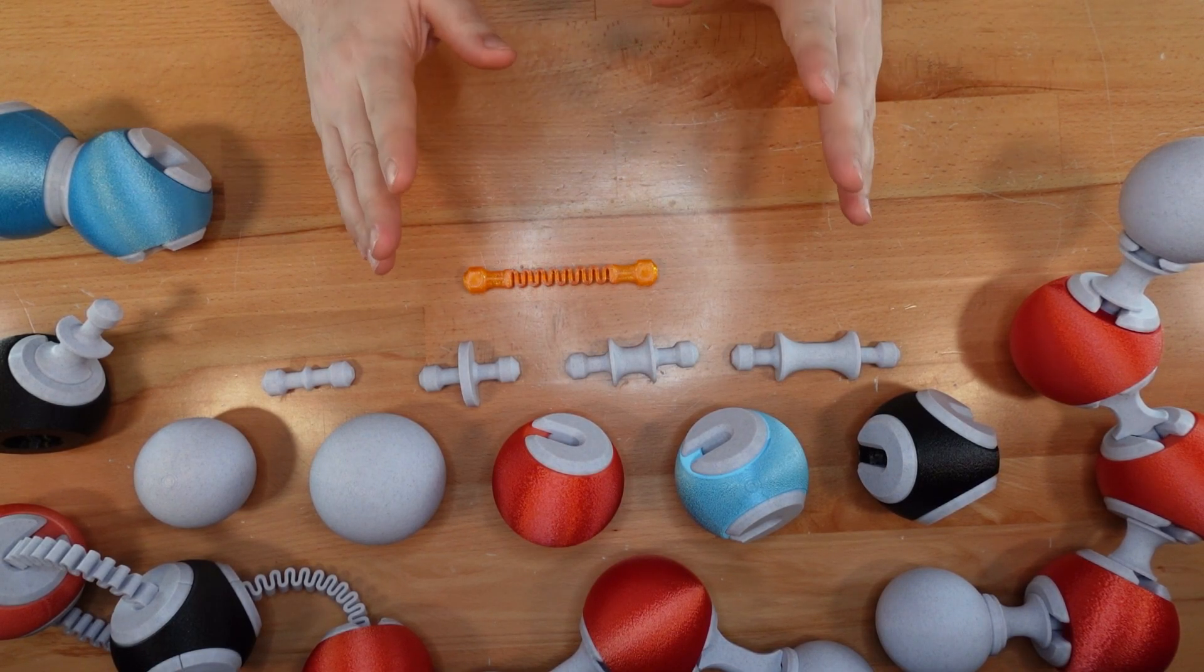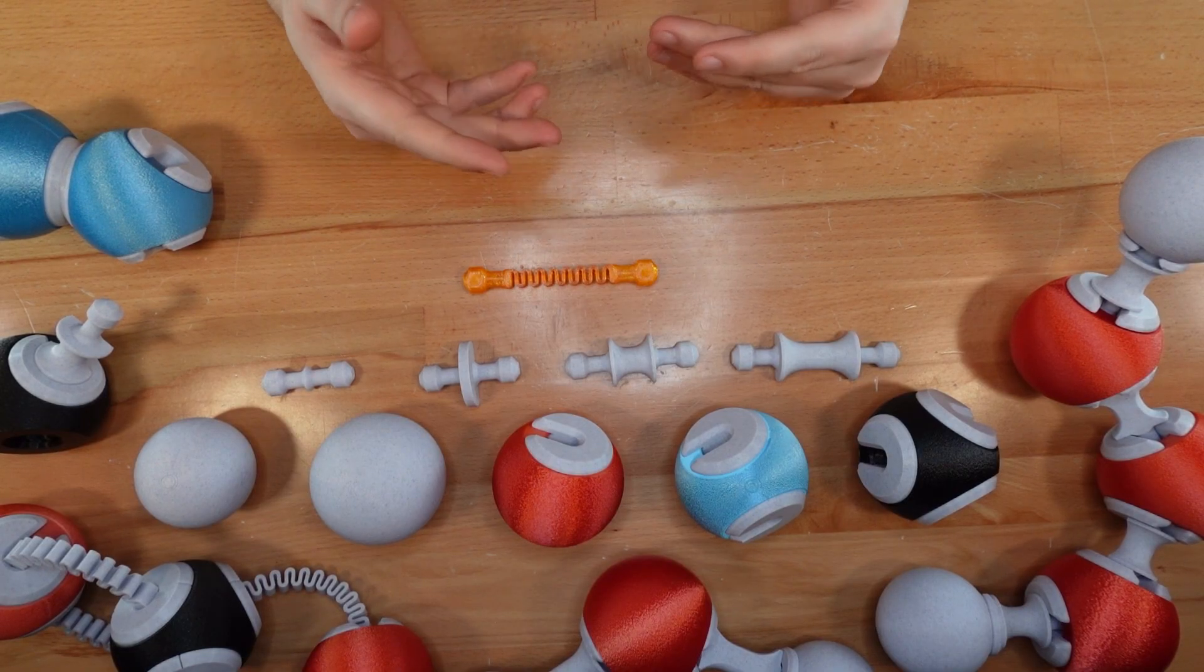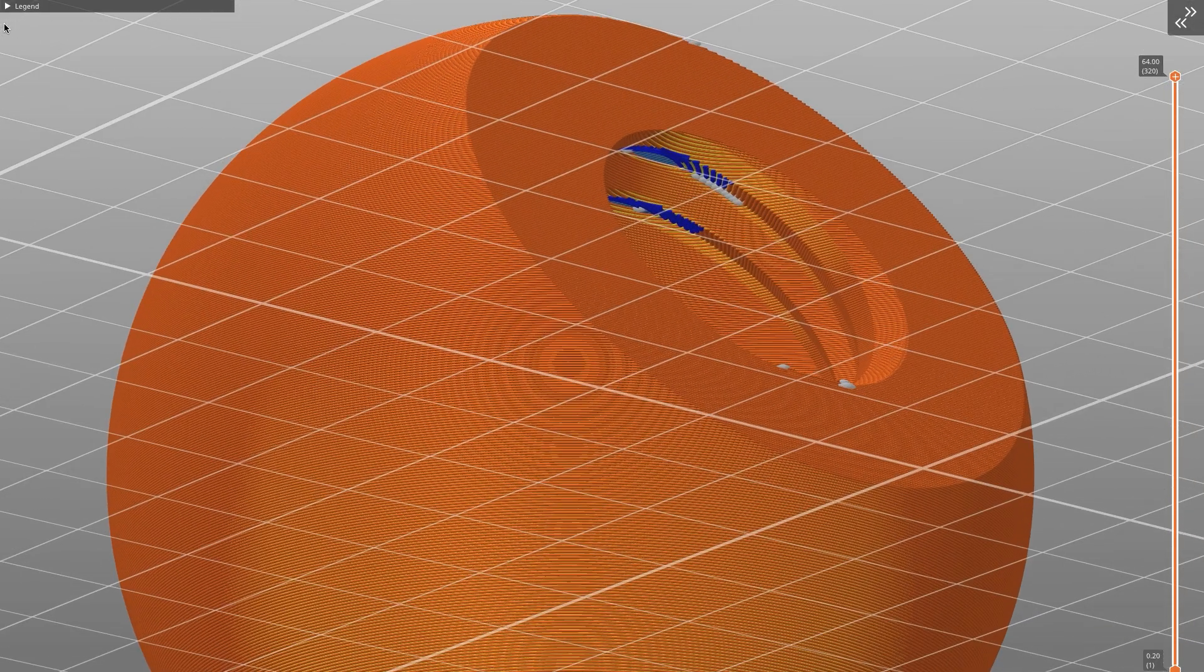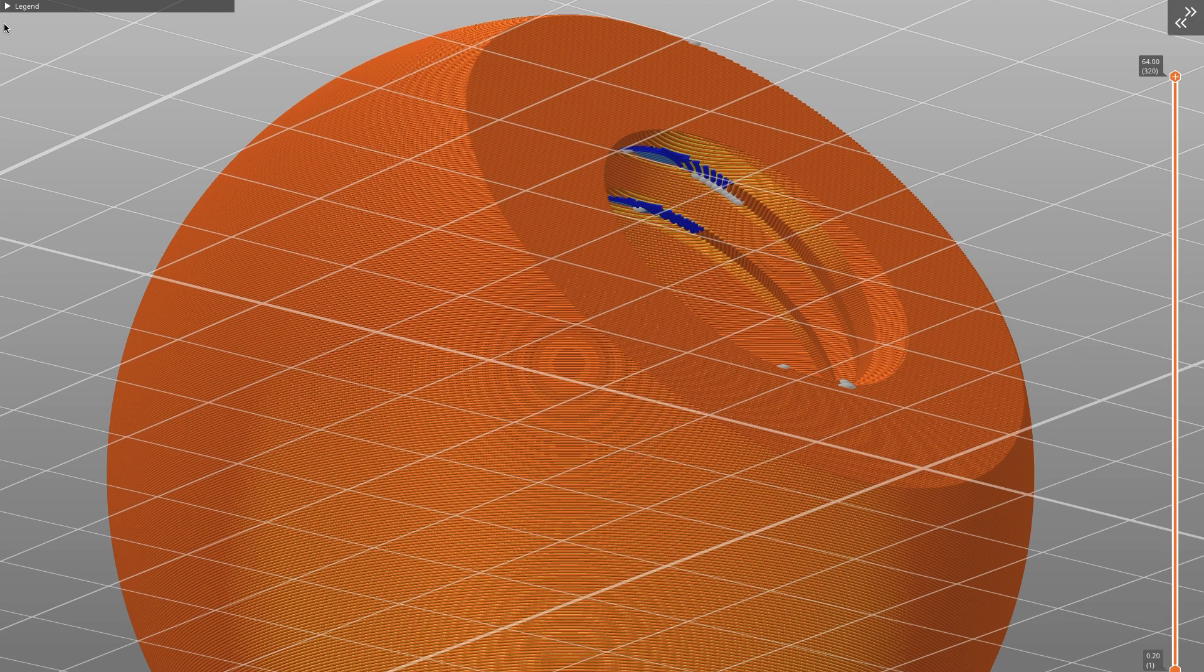If you'd like your own set, this kit is very easy to print. While the threads modeled into the atoms have some steep overhangs, most printers will be able to handle these without any supports.